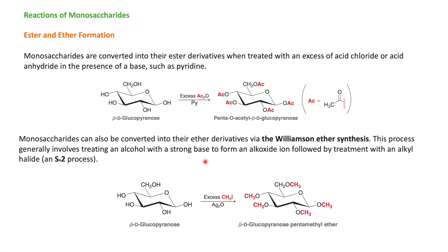The next reaction is Williamson ether synthesis on carbohydrates. In this reaction, we use an alkyl halide in the presence of a base. When treated with an alcohol, it gives an ether compound. When we treat beta-D-glucopyranose with iodomethane in the presence of silver oxide, it gives beta-D-glucopyranose pentamethyl ether. This reaction occurs through an SN2 process.